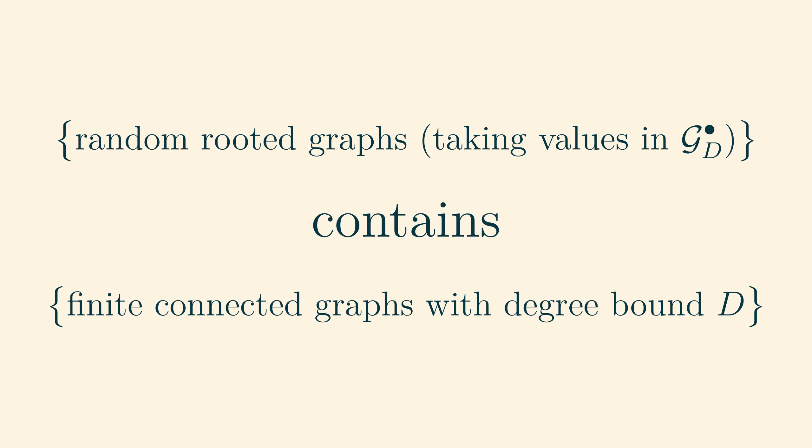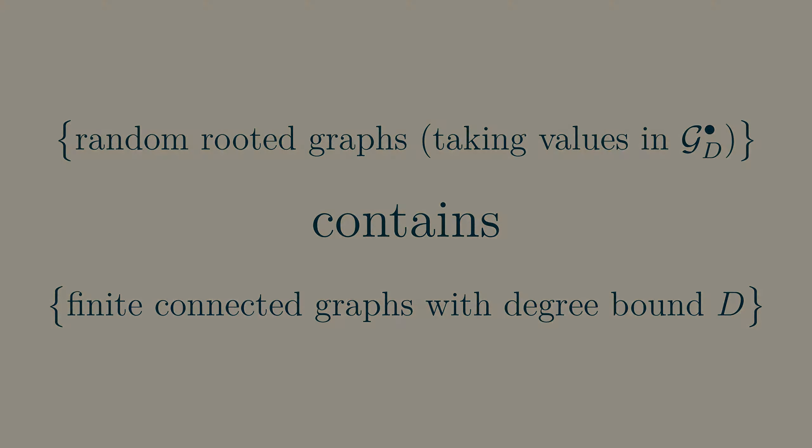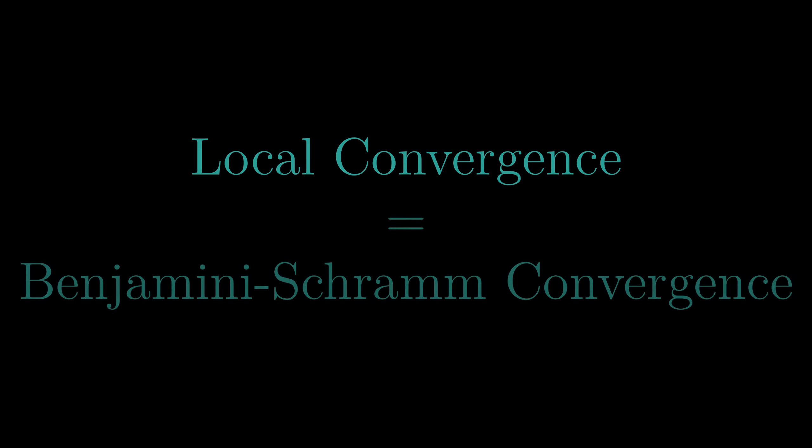So, we have created a compact space which contains a set of graphs as a subspace. In other words, we have constructed a graph limit theory. This particular graph limit theory is often called local convergence, or Benjamini-Schramm convergence, named after the mathematicians who discovered it.